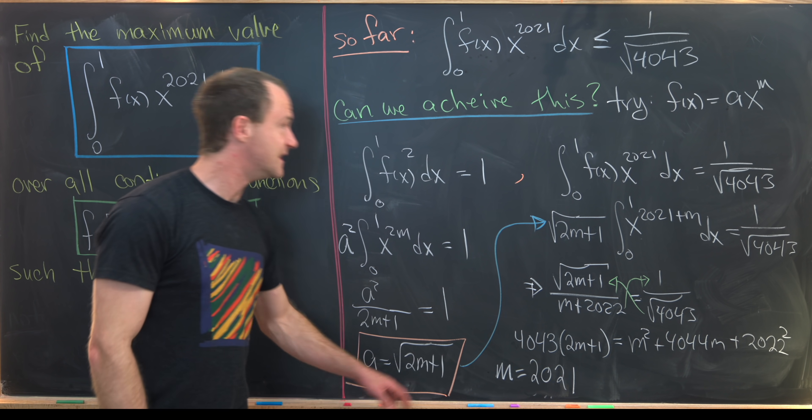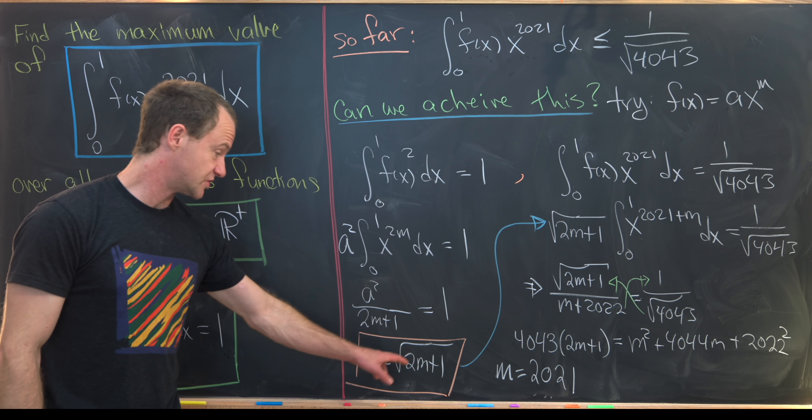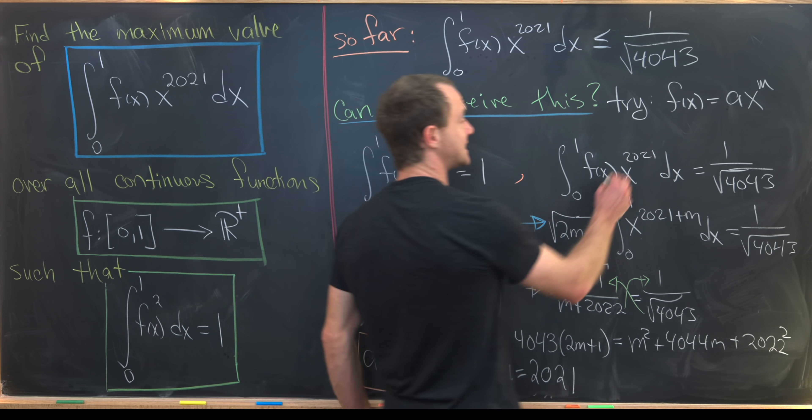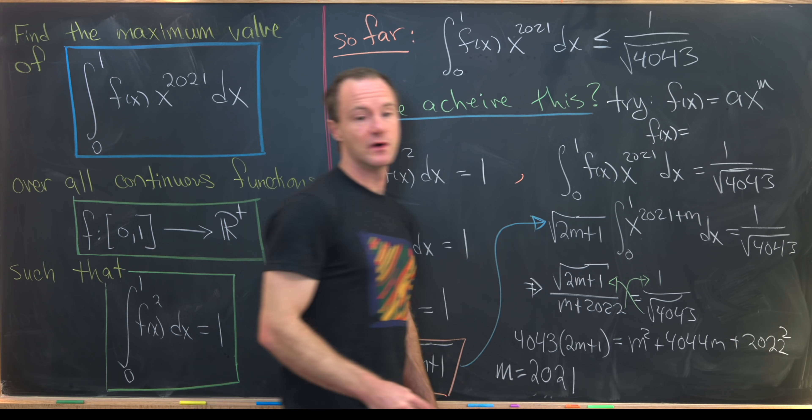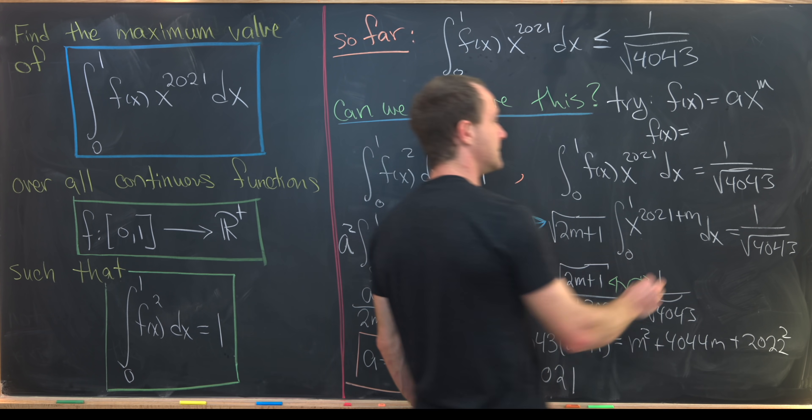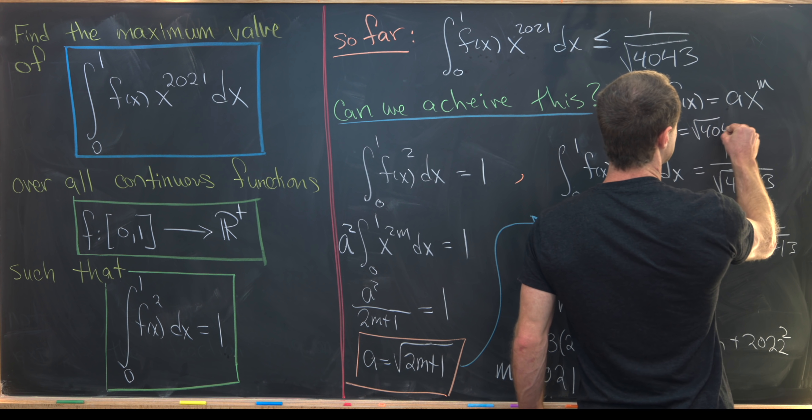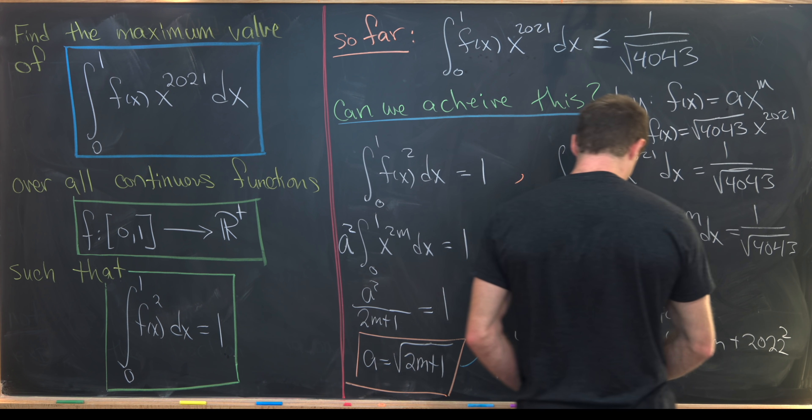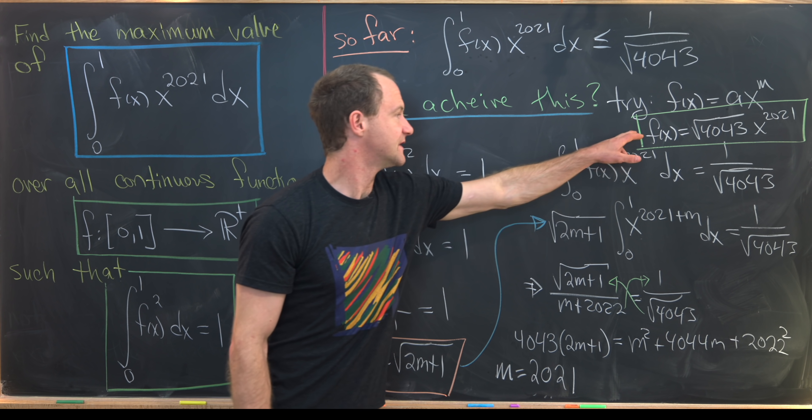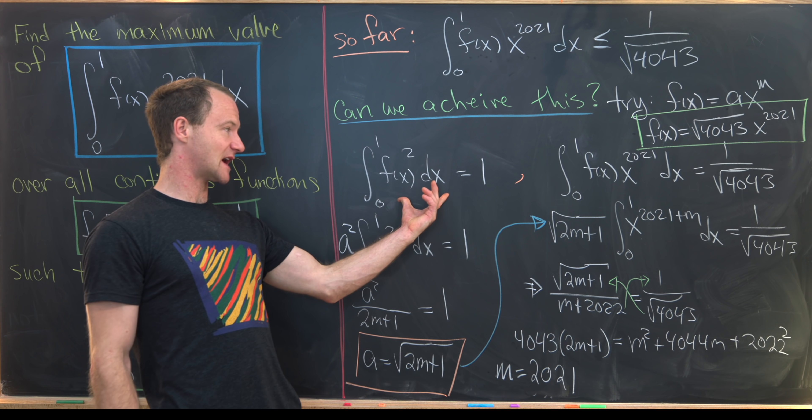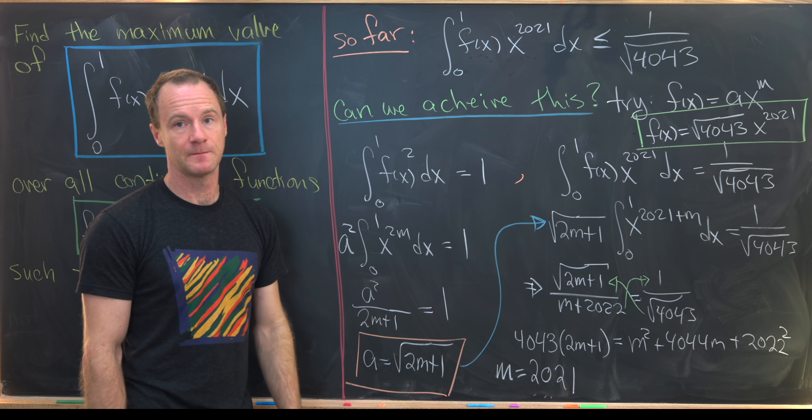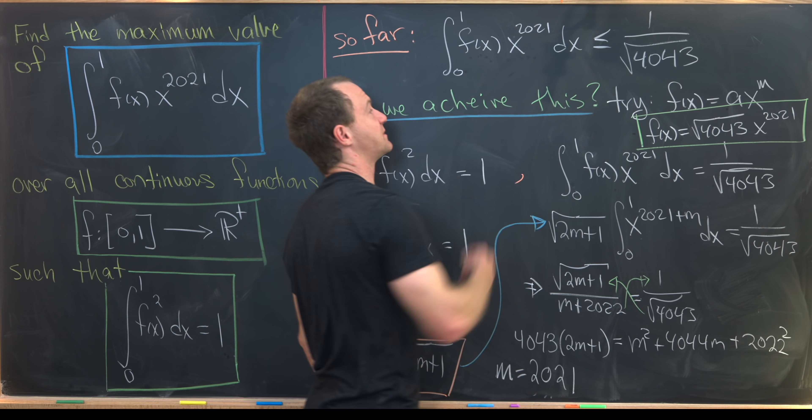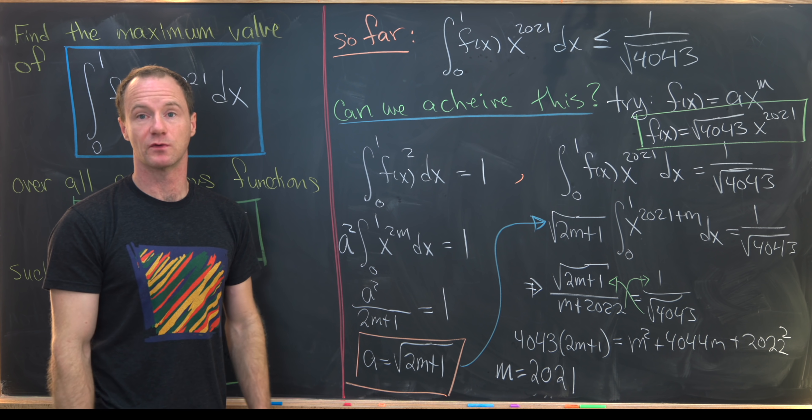So that together with this value of a, which is the square root of that thing right there involving m, tells us we have a final value of f(x) of the square root of 4043 times x to the 2021. So finishing it off, we've achieved a function that satisfies our required given and makes our goal object as large as possible from what we saw on the last board.